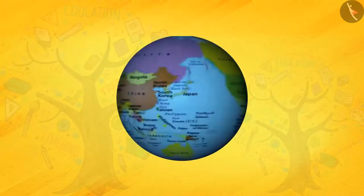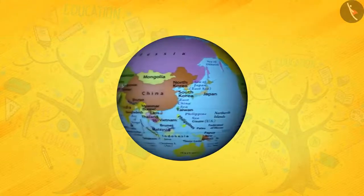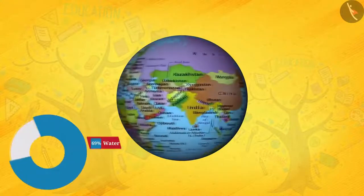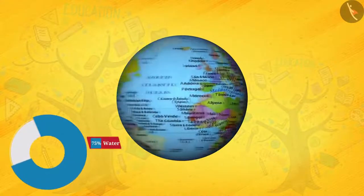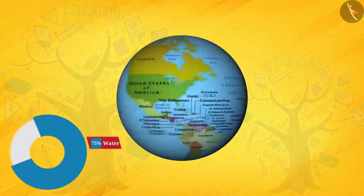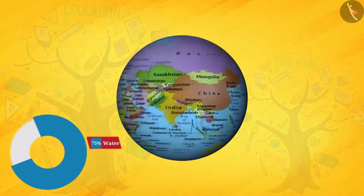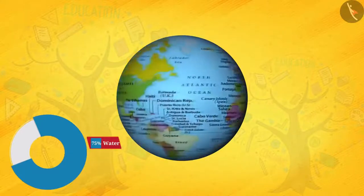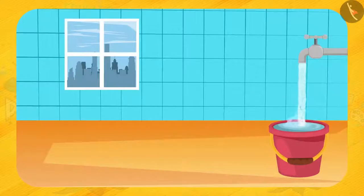The blue colored part you can see is water, and it is about 75 percent. Therefore, 75 percent of the total surface of earth is covered by water. Well friends, where does water come from? At your house, from the tap.